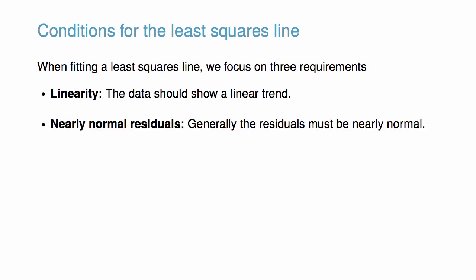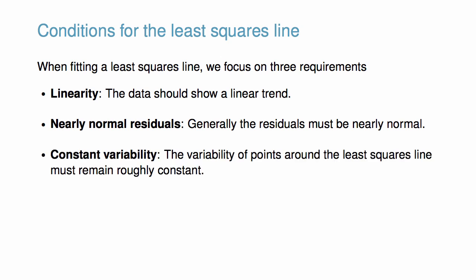Second, generally the residuals must be nearly normal. When this condition is found to be unreasonable, it is usually because of outliers or concerns about influential points. Third, the variability of points around the least squares line must remain roughly constant.